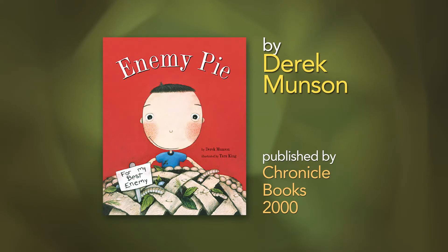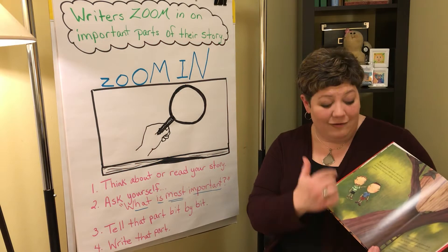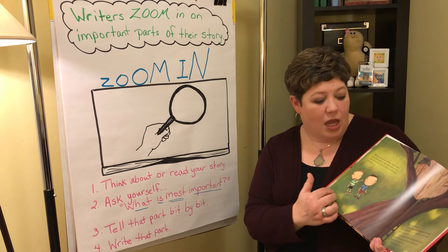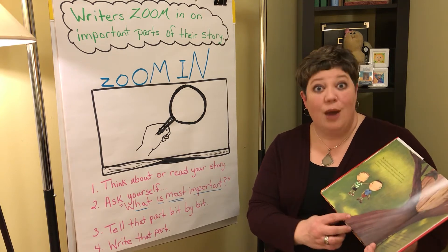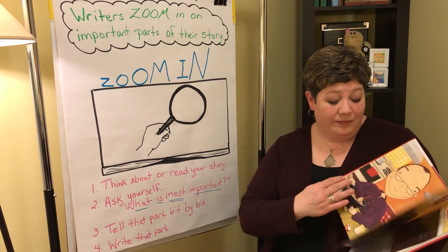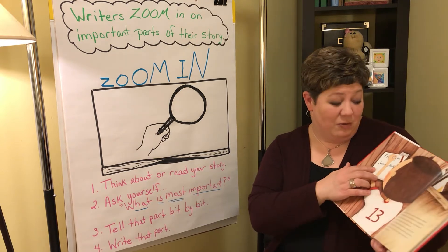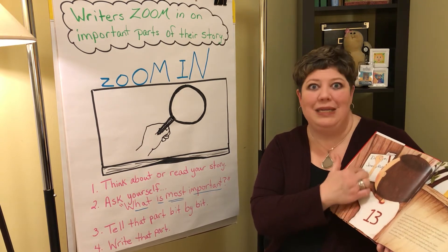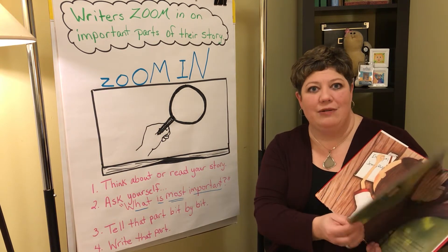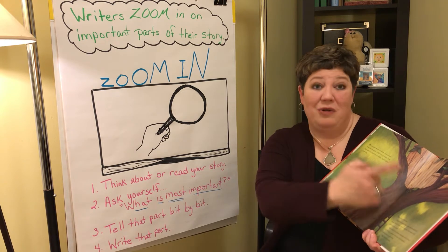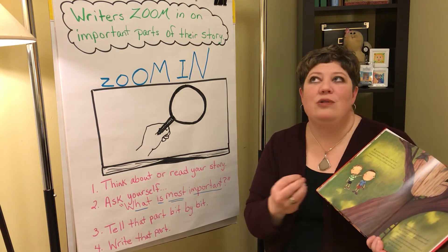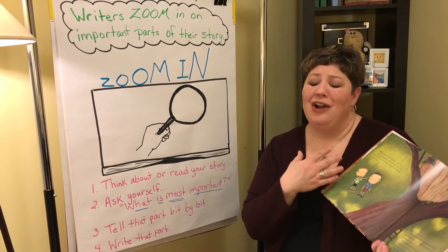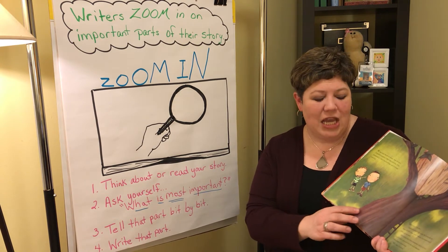There is a part in here where the boy — we don't know his name, he's narrating the story — is inviting who he thought was his enemy, Jeremy Ross, into his tree house. Jeremy really wants to go in the tree house, but earlier in the story the boy was thinking that Jeremy was not very nice. In fact, he was making an enemy list that he put up in his tree house, and now for the first time Jeremy is going to go up there, and the boy still has that list up.